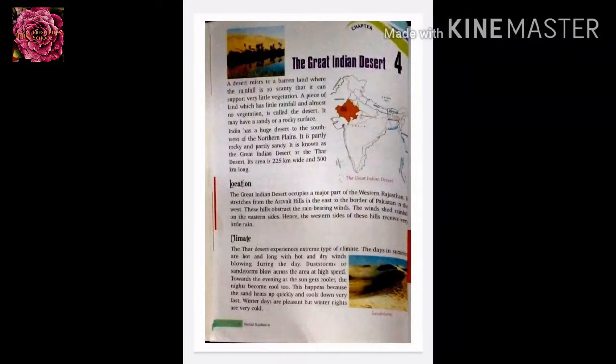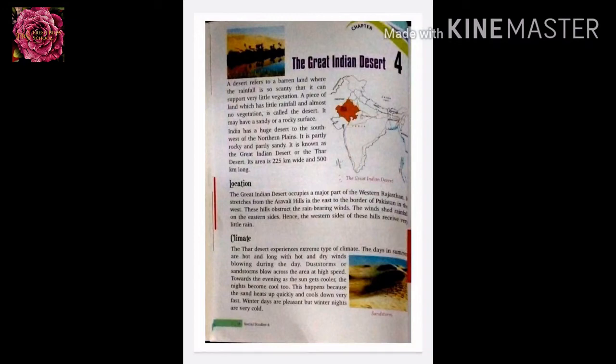India has a huge desert to the southwest of the northern plain. It is partially rocky and partially sandy. It is known as the Great Indian Desert or the Thar Desert.